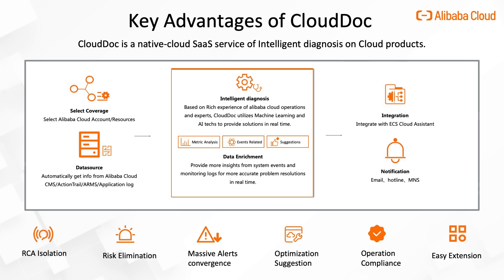Number three: alert convergence. By leveraging Cloud Doc, customers are able to converge similar risks and alerts from the monitoring system, so they can be more focused on the real problems that may have an impact. Number four: optimization suggestions. Cloud Doc integrates Alibaba Cloud experts' rich experience on products and solutions, and is able to provide optimization suggestions automatically based on data input.